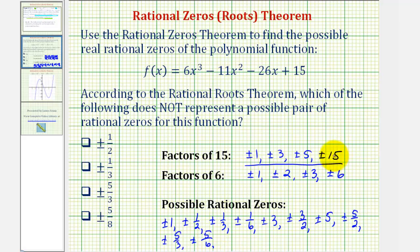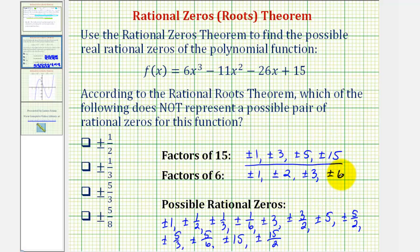Finally, moving to p = 15: plus or minus fifteen over one is plus or minus fifteen; plus or minus fifteen over two is plus or minus fifteen-halves. Plus or minus fifteen over three is plus or minus five, which we already have listed. And plus or minus fifteen over six simplifies to plus or minus five-halves, which we already have listed.